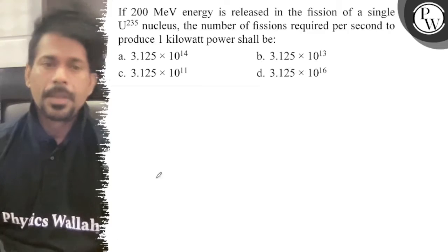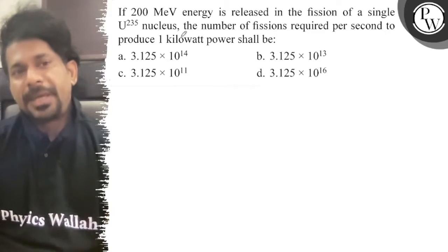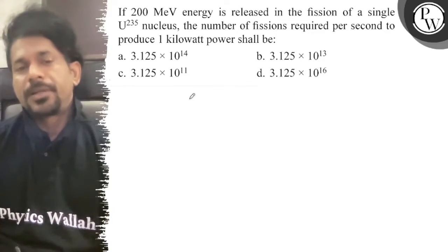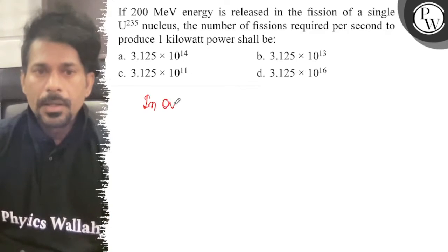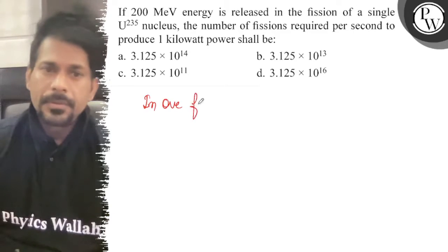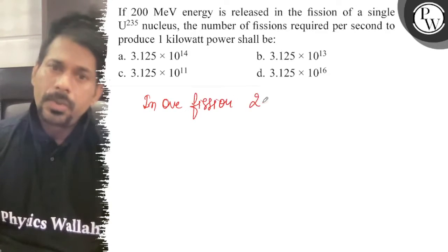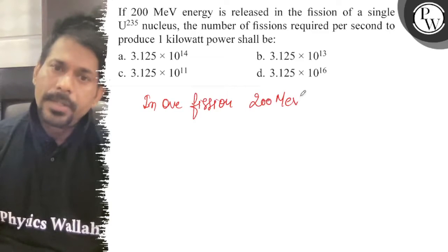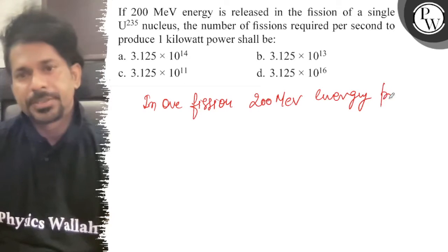So, in one fission, 200 MeV energy is produced.